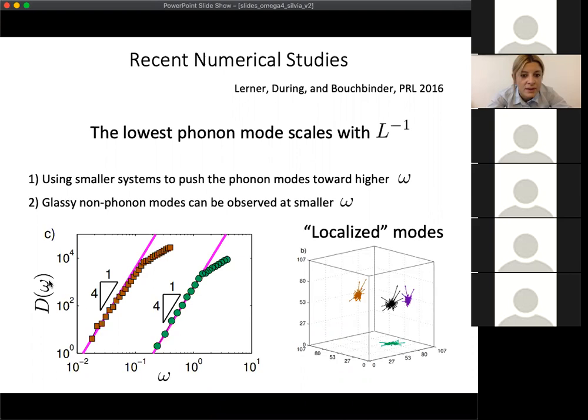The recent paper by Lerner and Bouchbinder in PRL 2016 focused on this very important fact that the lowest phonon mode is actually determined by the system size, in particular the inverse of the system size. If you have a large system, the lowest phonon mode is a very small frequency. On the other hand, if you have a small system size, the lowest phonon mode is quite higher. You can use a smaller system to push the phonon modes toward the higher frequencies and see whether the glassy non-phonon modes appear.